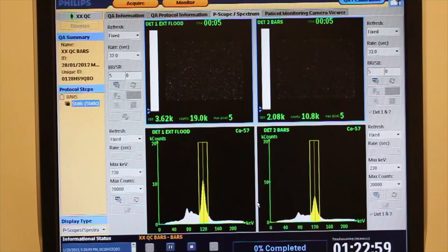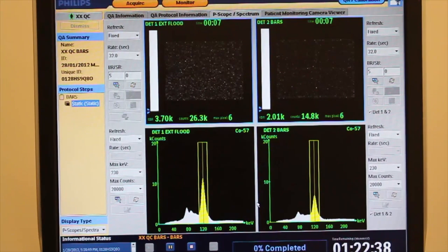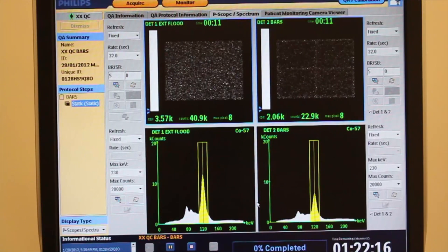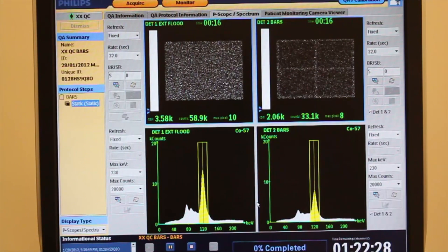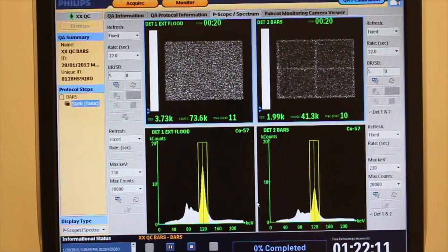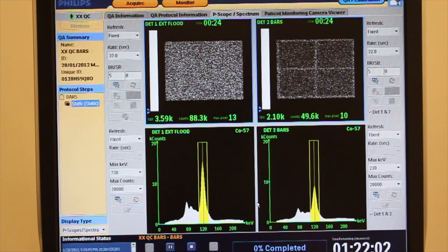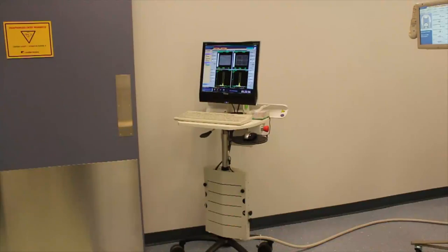Start the acquisition. Note the progress slider and ensure that the acquisition is in progress. Verify the proper placement of the bar phantom on the detector. If the bar phantom is not centered, correct the position and restart the acquisition.